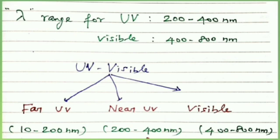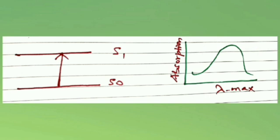UV-visible spectroscopy can be classified into three types: first is far UV or vacuum UV, second is near UV, and third is visible. Far UV covers wavelengths from 10 to 200 nanometers; near UV covers 200 to 380 or 400 nanometers; visible covers 400 to 800 nanometers. The transition of electrons in any atom or molecule from lower to higher energy levels gives rise to absorption bands, and the absorption peak represents contributions of vibrational and rotational levels.